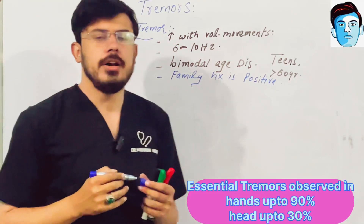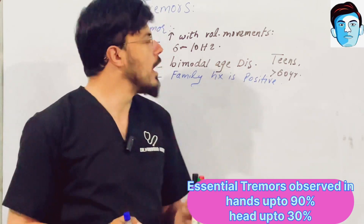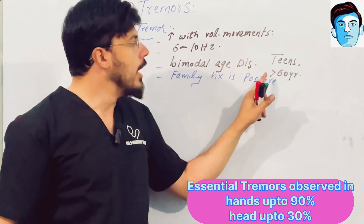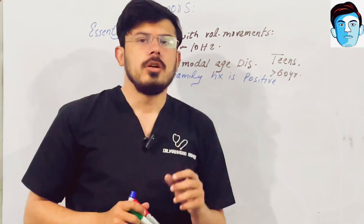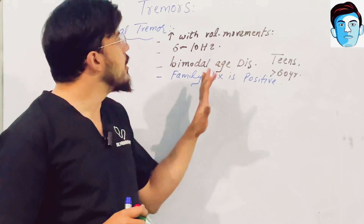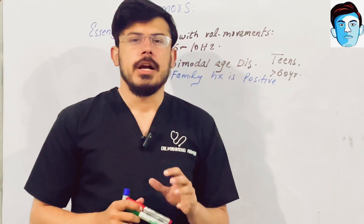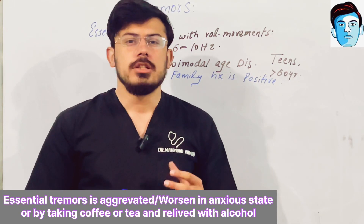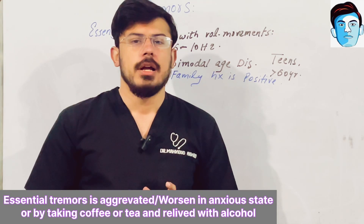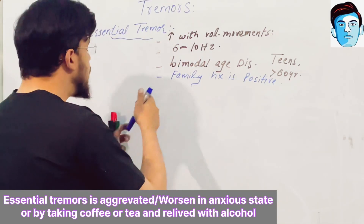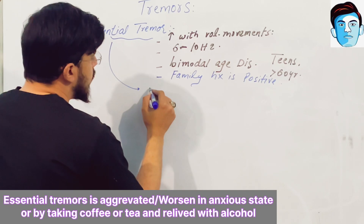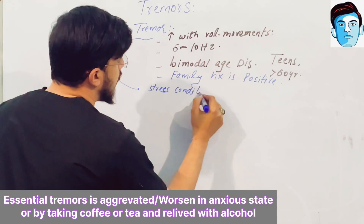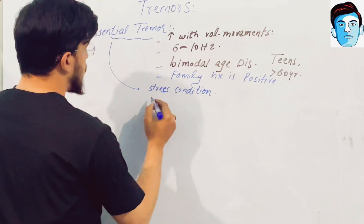Essential tremors are aggravated with movements and relieved with rest. The frequency is 6 to 10 hertz, with bimodal age distribution in teens and those more than 60 years. The most definitive sign for essential tremors is that the condition is worsened with anxiety or certain stress conditions, but it is relieved when the patient takes alcohol.